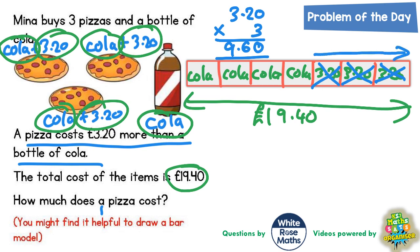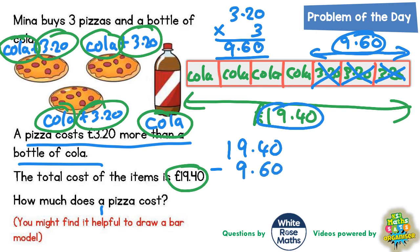So this section of £3.20 here is worth £9.60. So if we subtract the £9.60 from our total of £19.40, let's see what that leaves us with.